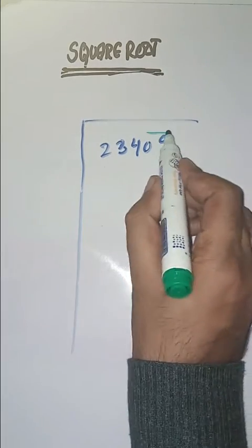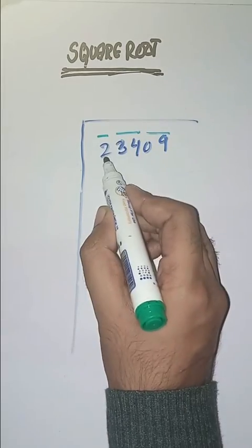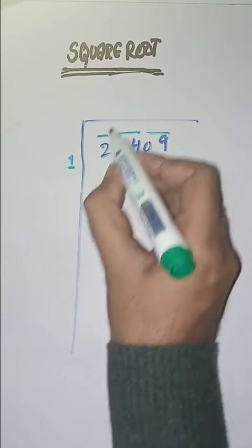So first we have to solve two. So we take a number one. One ones are one, minus this, we'll pass one.